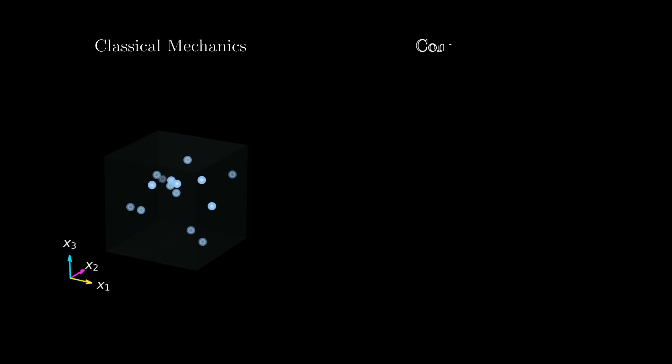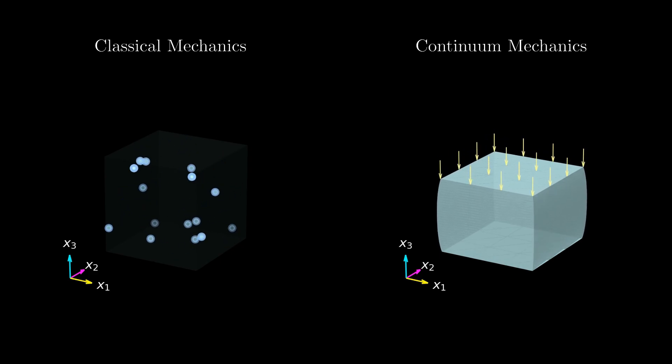In Continuum Mechanics objects are not anymore assumed to be rigid, but instead their shape may change over time as you can see in this exemplary simulation of a solid that deforms under external forces.